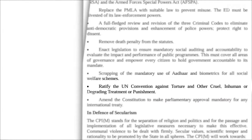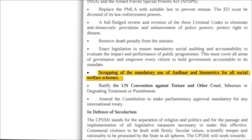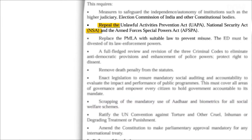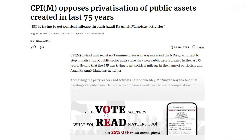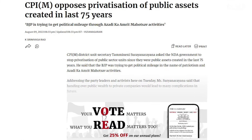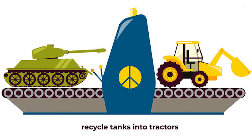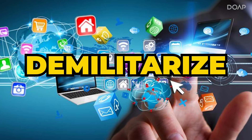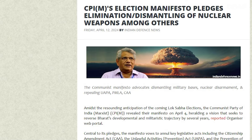CPI also promises to charge heavy taxes on wealthy individuals and wants to scrap the usage of Aadhaar for all social schemes. CPI also wants to abolish many acts that guarantee safety to states from terrorism, and wants to remove privatization from the country. In terms of national security, CPIM aims to demilitarize cyberspace and pursue complete elimination of nuclear power — which is ironical, because how else would you plan on defending your nation? All of this is a major part of CPIM's foreign policy.